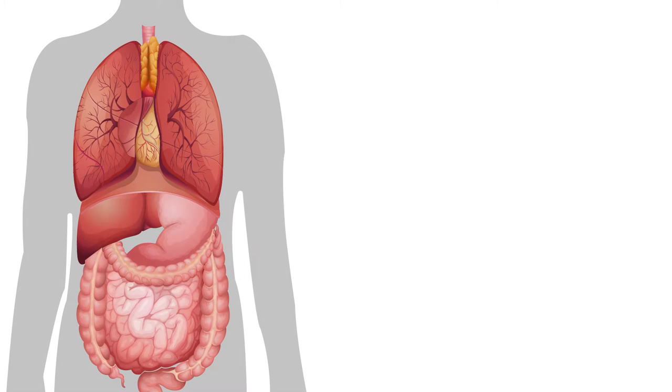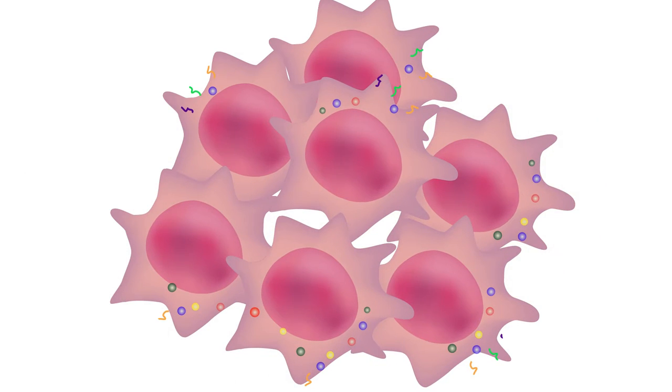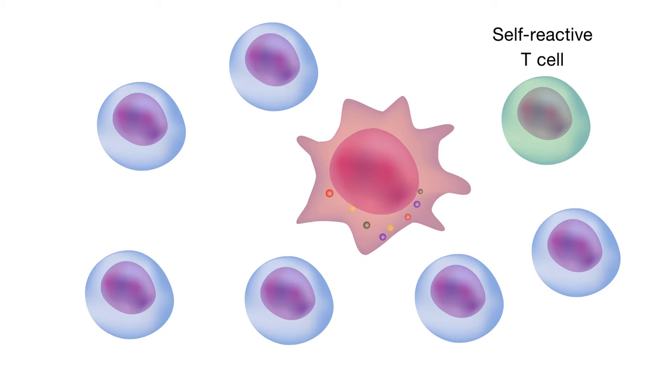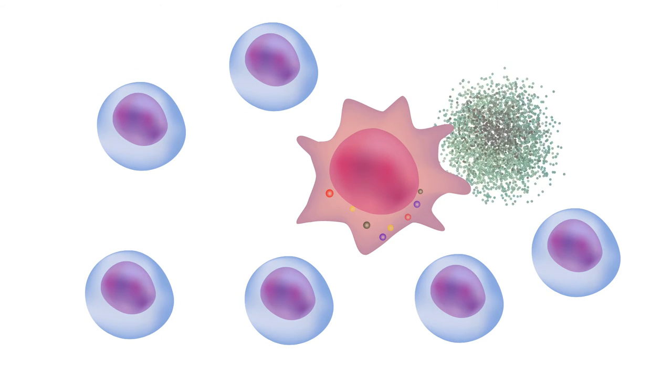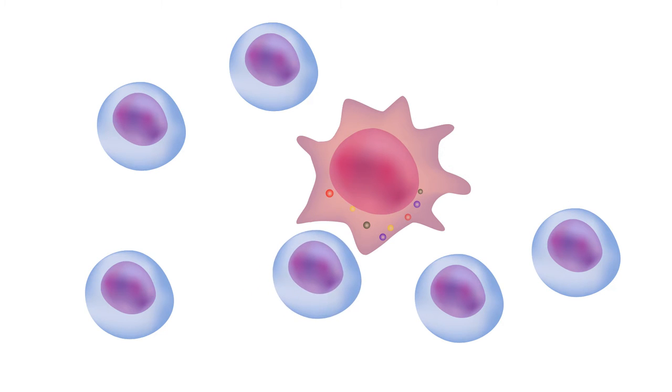AIRE works exclusively in a unique cell population of the thymus, where it turns on a battery of the body's own proteins. This in turn serves as a sort of test for newly generated T cells. Those that are self-reactive are eliminated so that they will not cause harm by attacking the body's own tissues when released to the circulation.